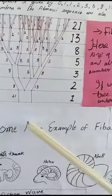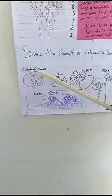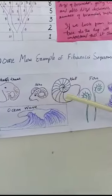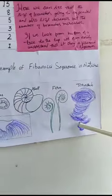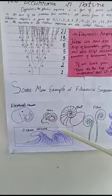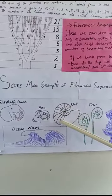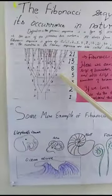And some more examples of Fibonacci sequence in nature are elephant trunk, horn, shell, fern, tornado, and ocean wave. In all these examples, we see that it starts from small, and it's going to expand, just as the stream.